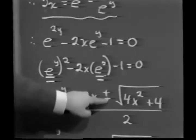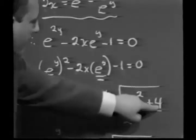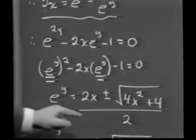e to the y is 2x plus or minus the square root of 4x squared plus 4, all over 2.